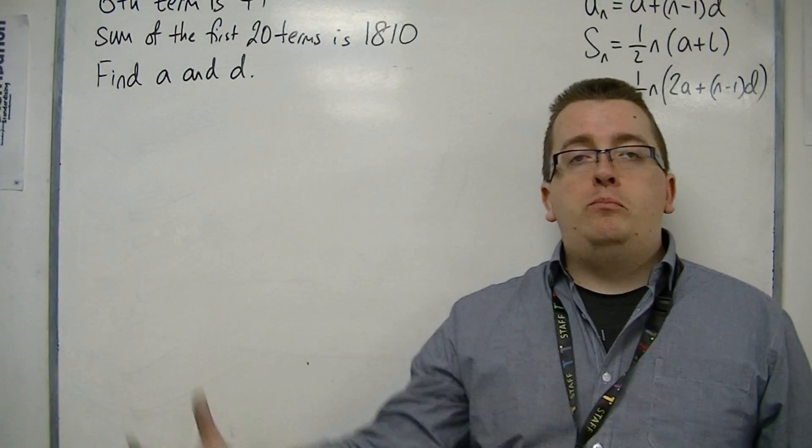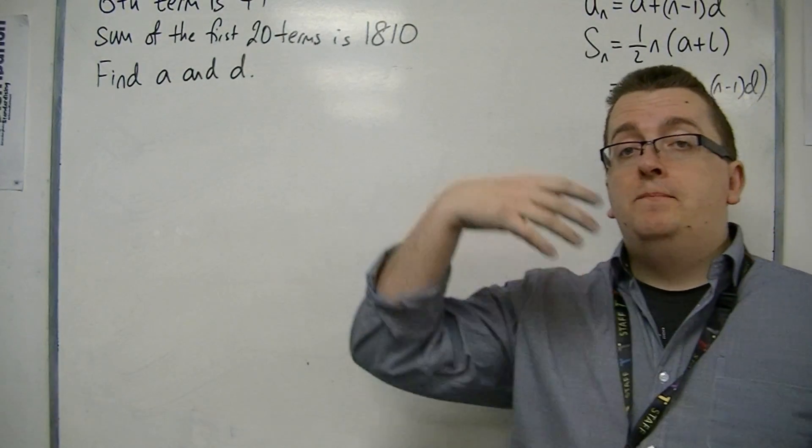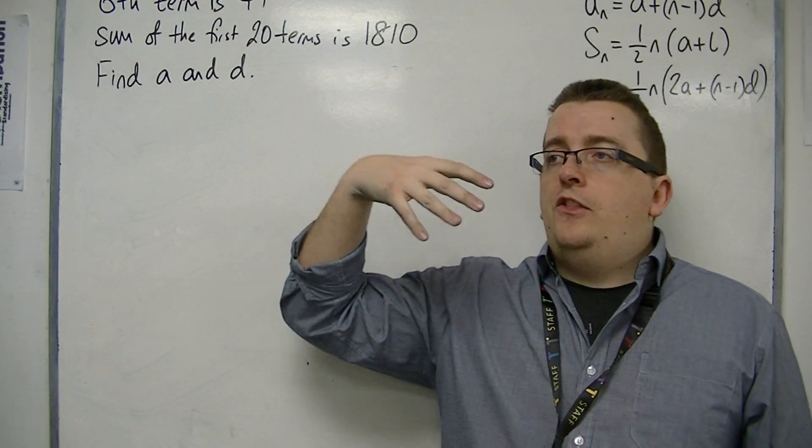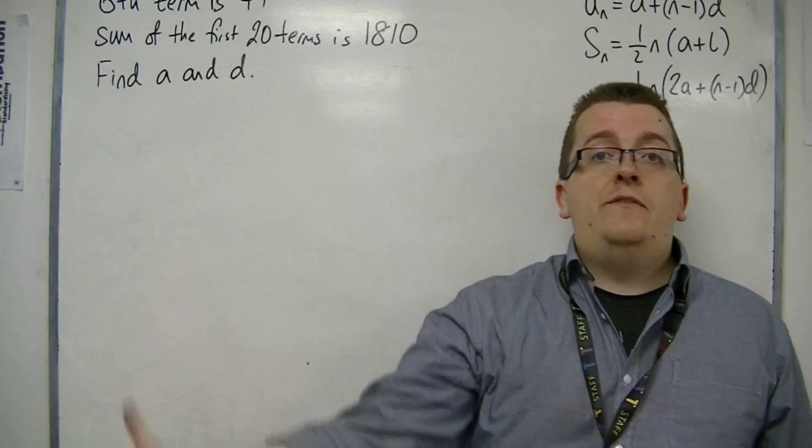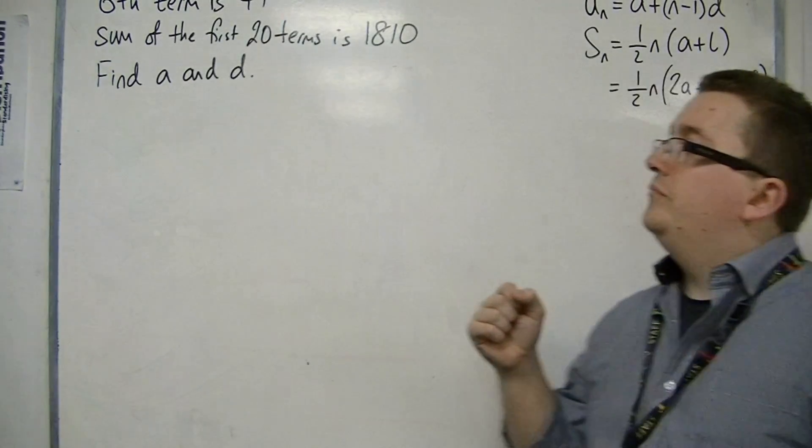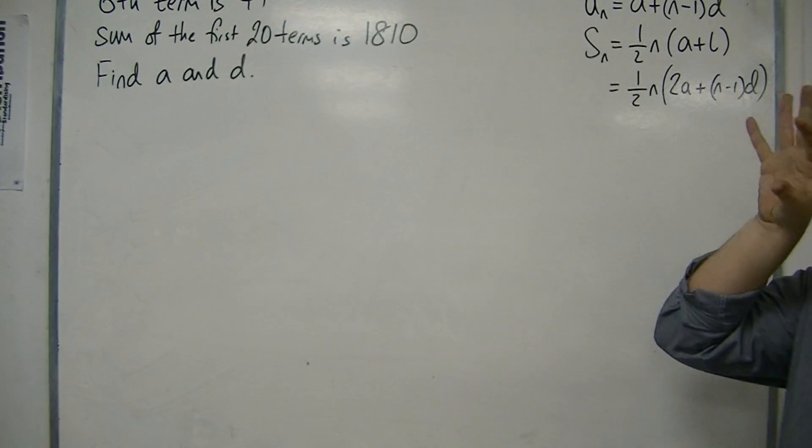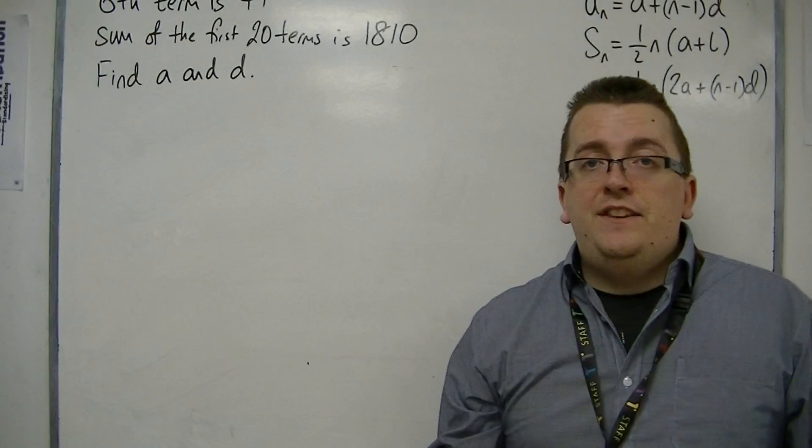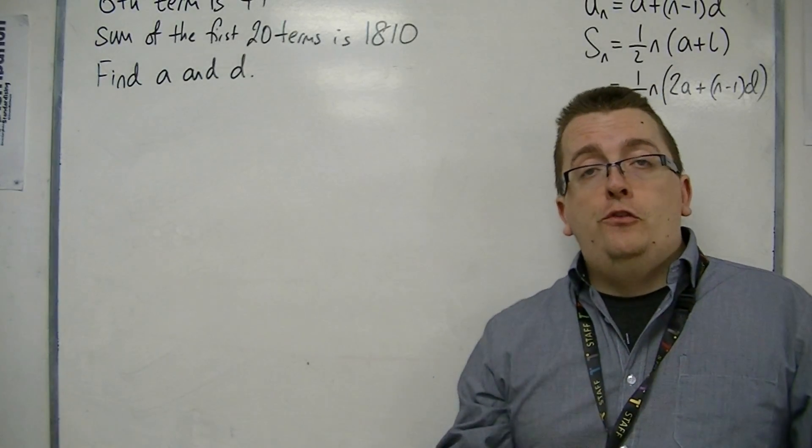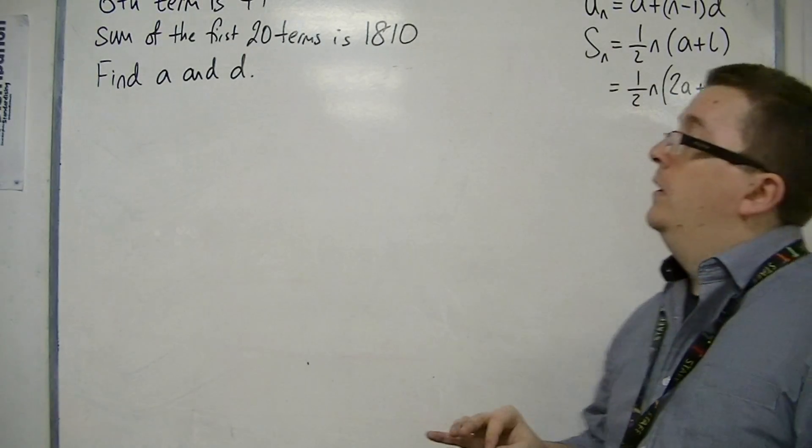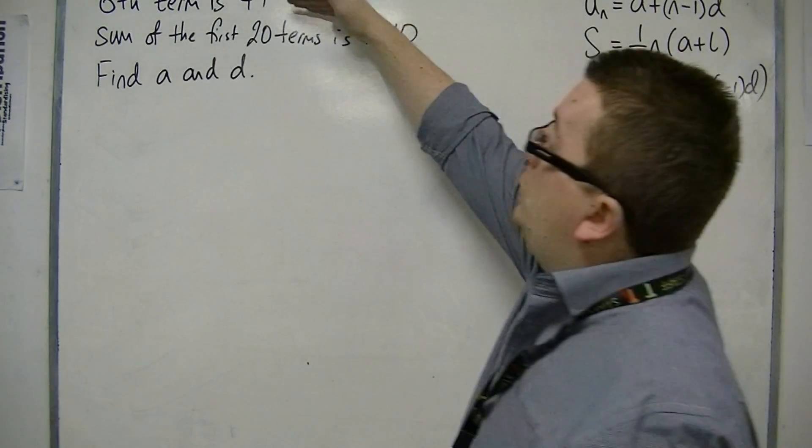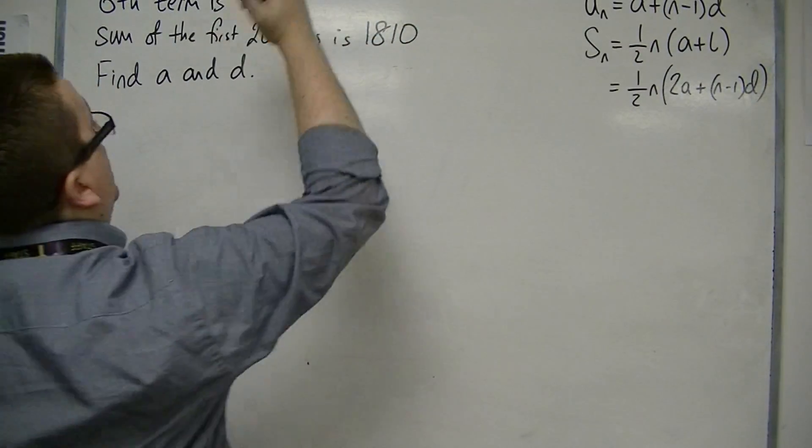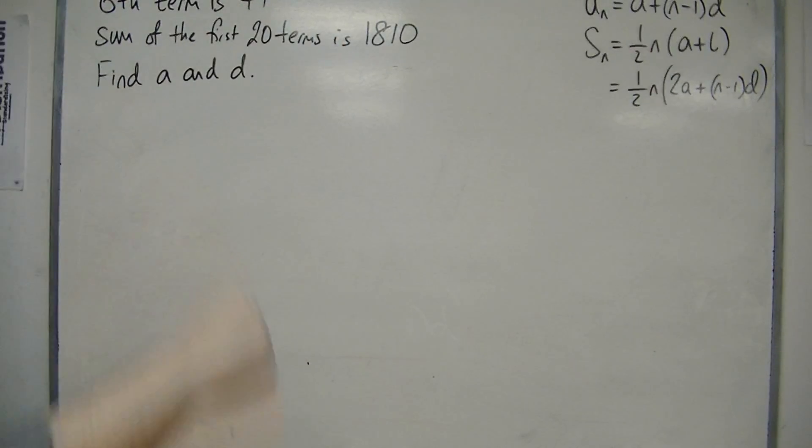So this is very similar to the previous problem where we were given the fifth term and the eleventh term, for example. So we need to find two equations in A and D that will allow us to then solve them simultaneously. Now the first one we should be able to do knowing that information from the previous video.